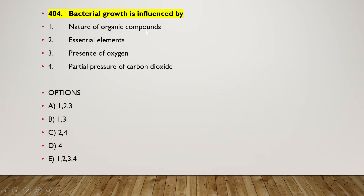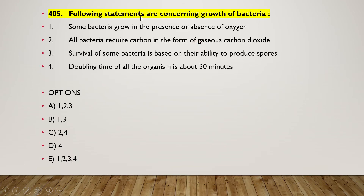Next question: bacterial growth is influenced by — (1) nature of organic compounds, (2) essential elements, (3) presence of oxygen, (4) partial pressure of carbon dioxide. The right answer is option E — one, two, three, four — all options are correct.